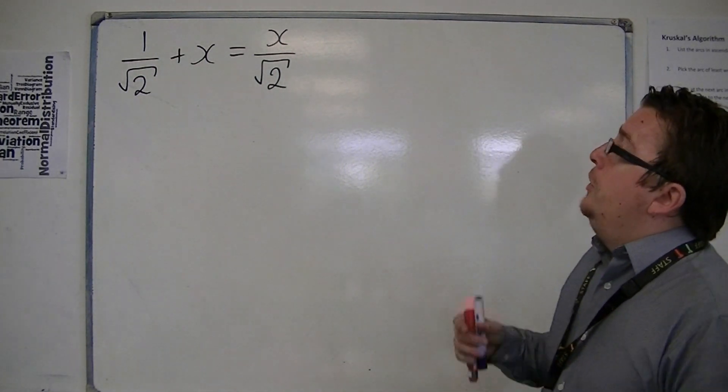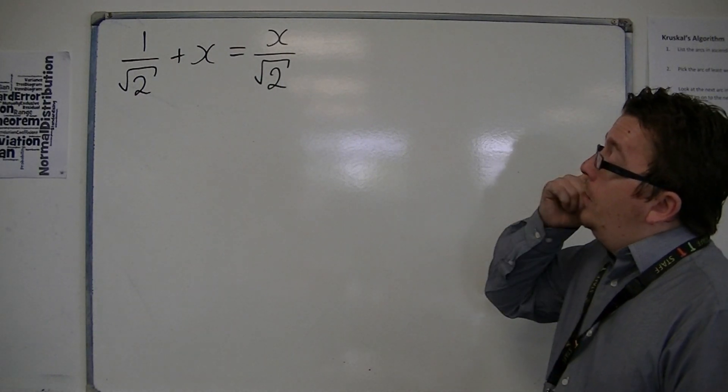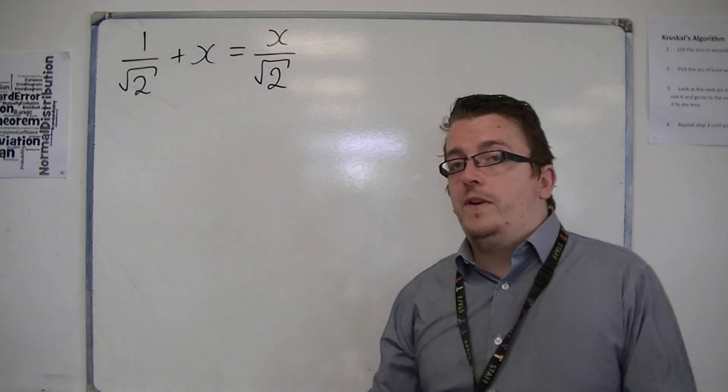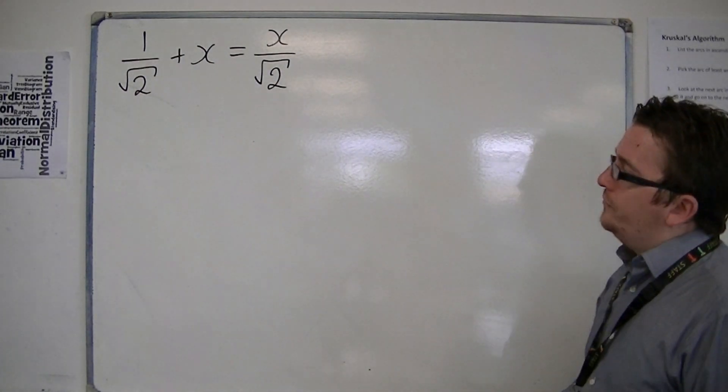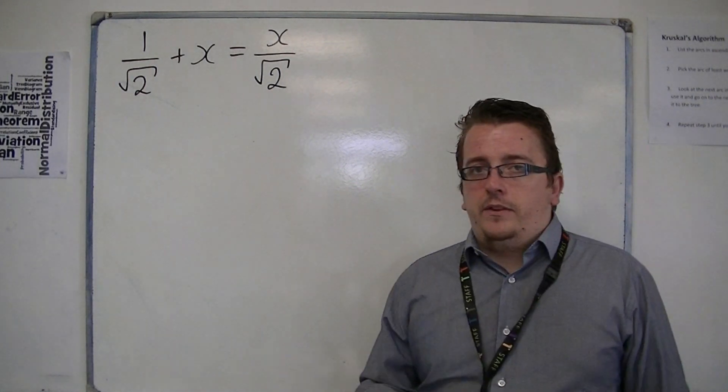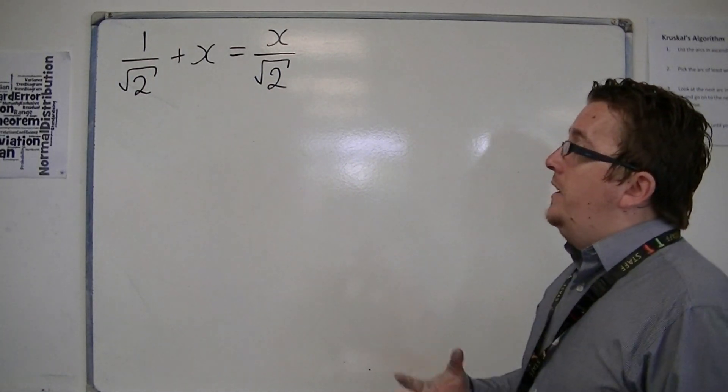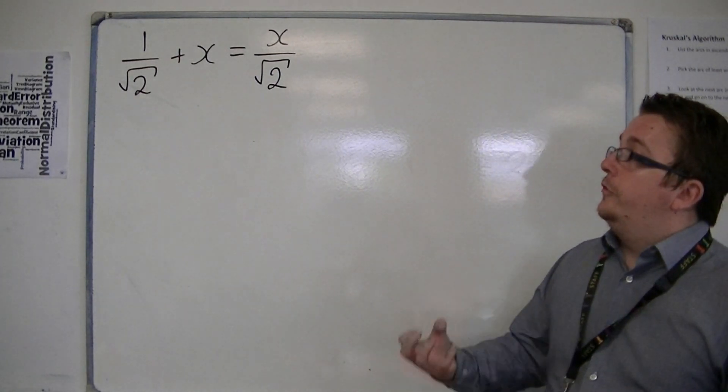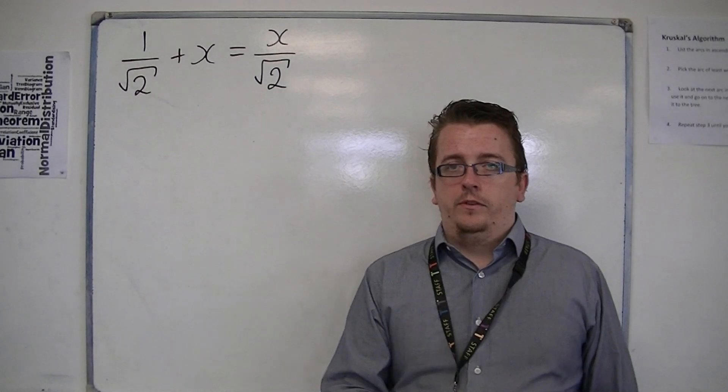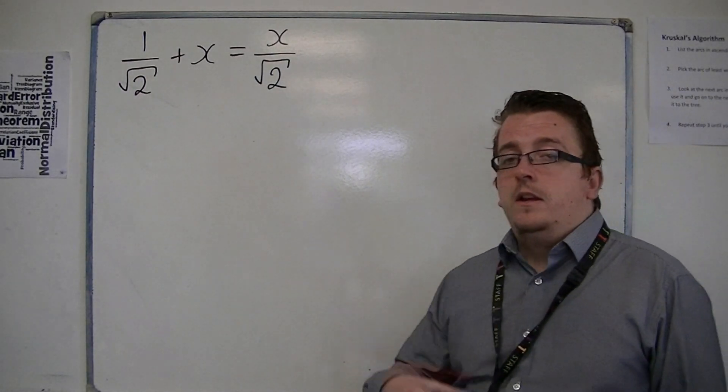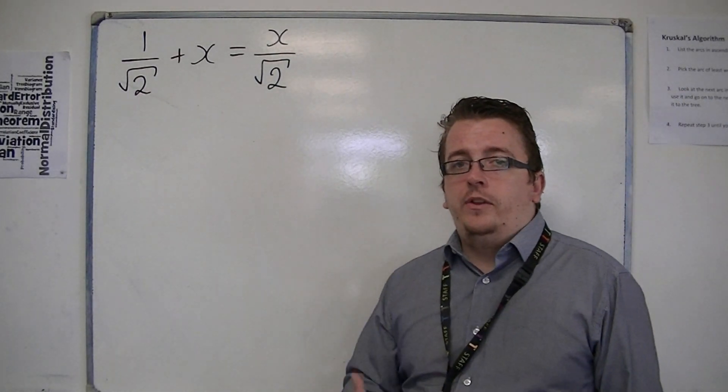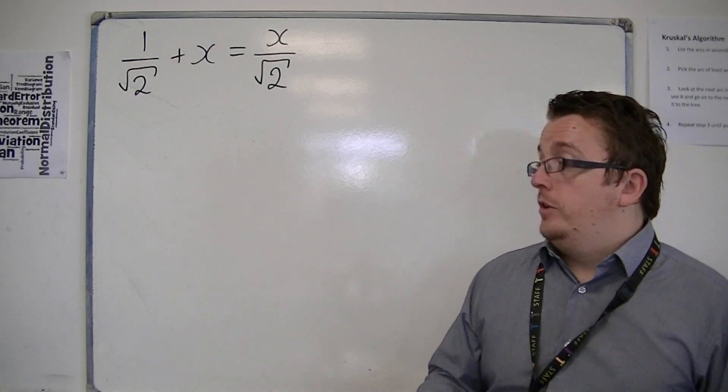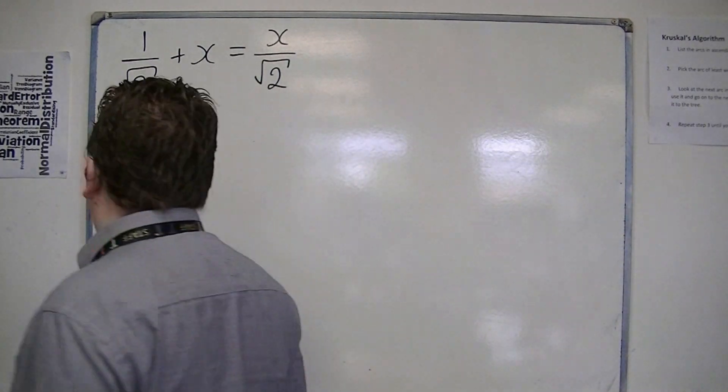You could potentially have something that looks like this: 1 over root 2 plus x is equal to x over root 2. And we need to determine what the value of x would have to be. In doing this, we're going to need to have good algebraic skills, but also good and strong surds knowledge. Let's say that we need to write x in as simple form as possible, where the denominator has been rationalized.